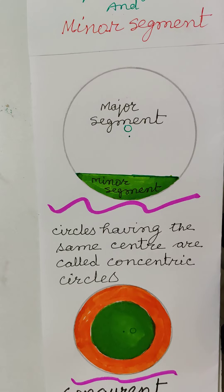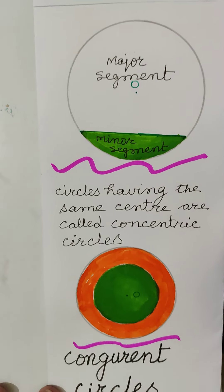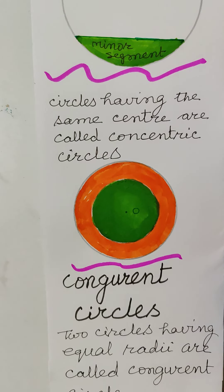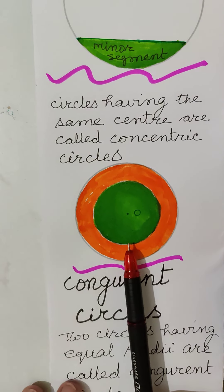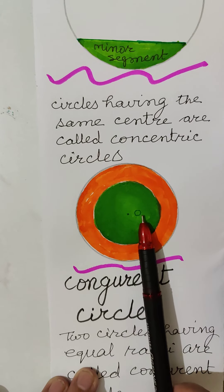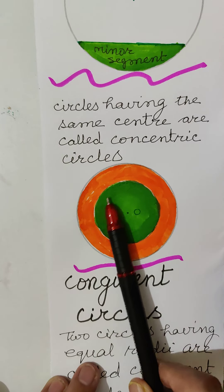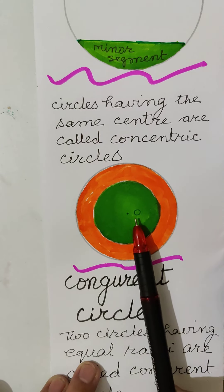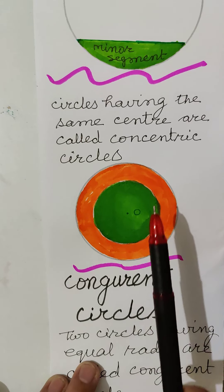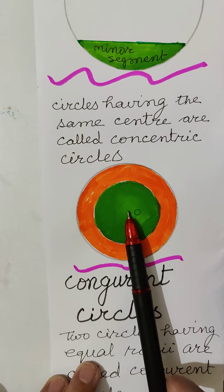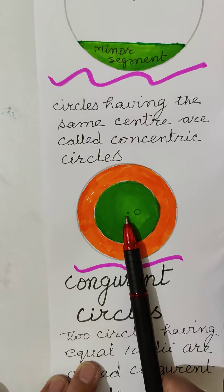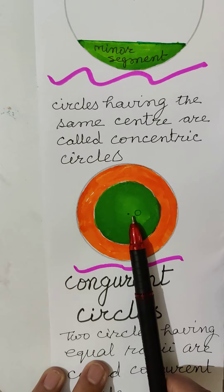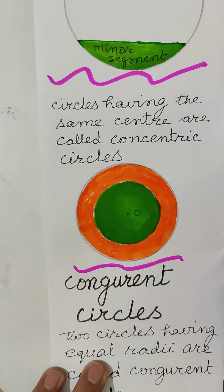Circles having the same center are called concentric circles. There are two circles with the same center O — one in green and one in saffron. These two circles are concentric circles since both have O as their center.